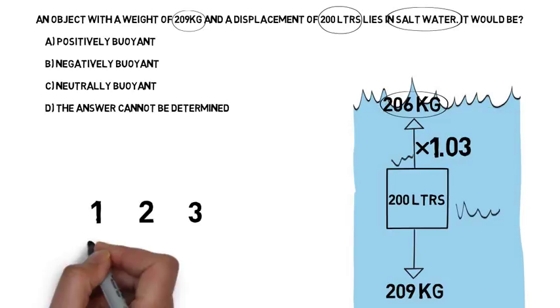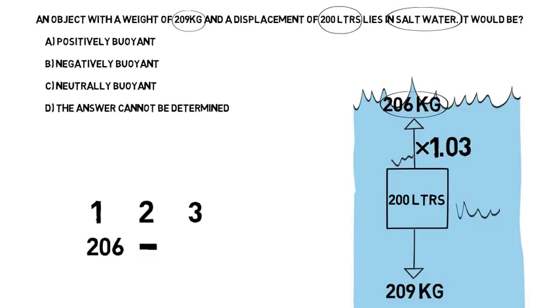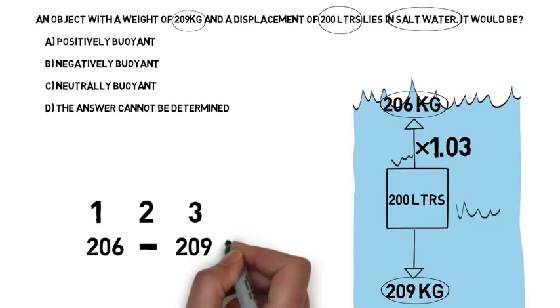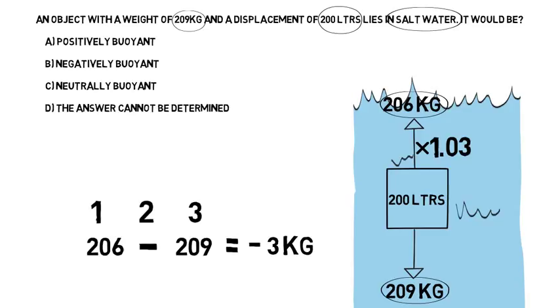That number is what goes under step one in our three-step process. We subtract the weight of the object from the upward force. We're wanting to find the difference between the upward force and the downwards force. So we now have 206 minus 209. It is negatively buoyant by three kilograms. This object is sinking, it is sitting on the bottom of the ocean.